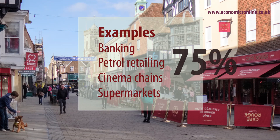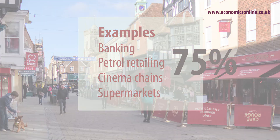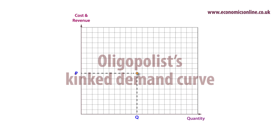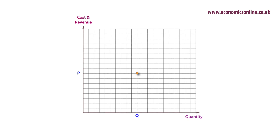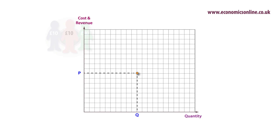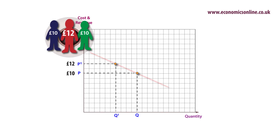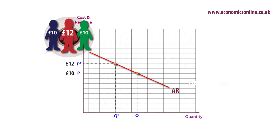Interdependence can be understood by looking at the oligopolist's kinked demand curve. If a firm raises its price — say from £10 to £12 — rivals will not follow suit, as they will gain an advantage by holding their price constant. Hence the price-raising firm loses market share and loses revenue. Demand is relatively elastic.